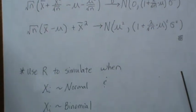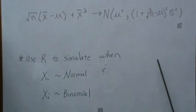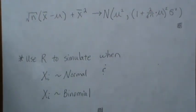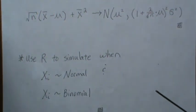So now let's use R to simulate these results for a normal and a binomial distribution, and see if they're close to what the delta method theory says they should be.